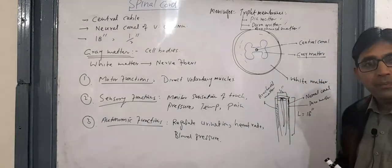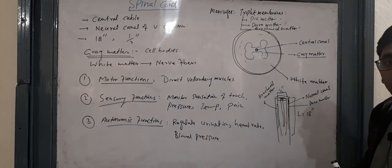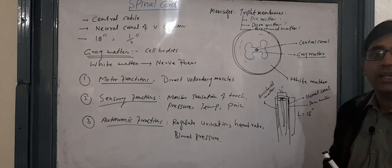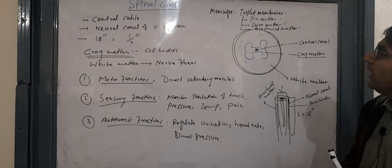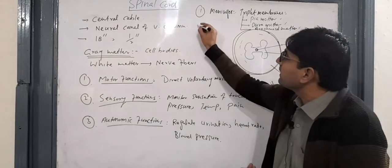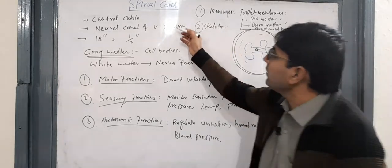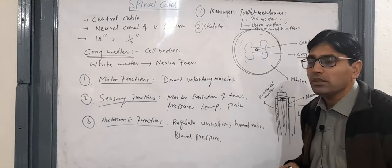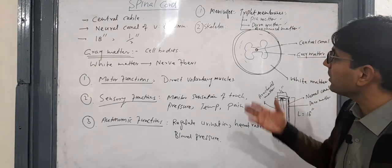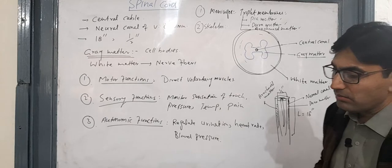Between the dura mater and pia mater is the cerebrospinal fluid, which is responsible for absorbing shock, thus providing protection to the spinal cord through the meninges. Additionally, the spinal cord is protected by the skeleton — specifically the vertebral column, which forms the neural canal.